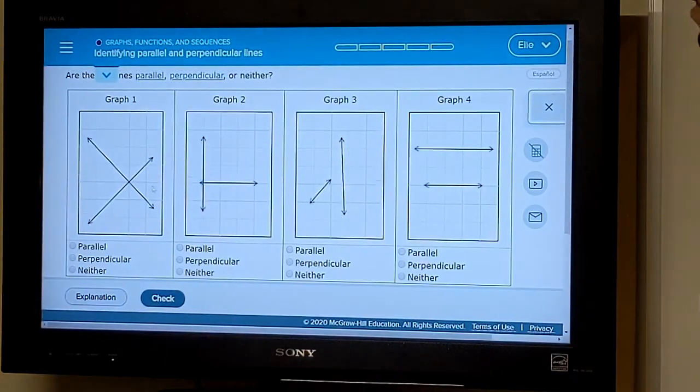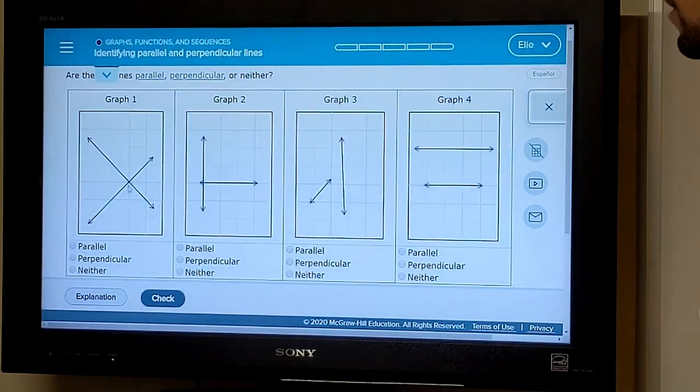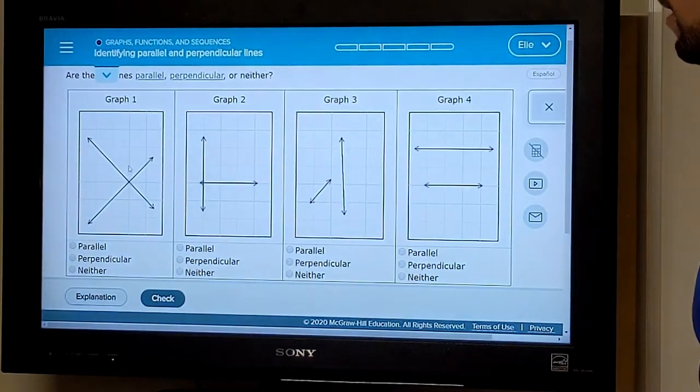Inside ALEKS, we're going to look at this first diagram. It looks like we're actually able to tell the slopes of these two lines. It looks like here we have a slope of rise one, run one, and rise negative one, run one.